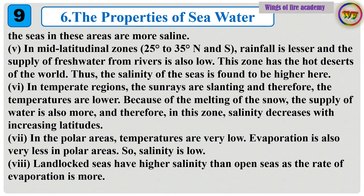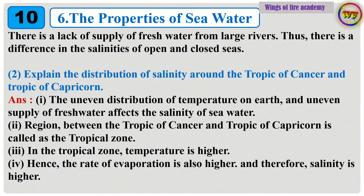In temperate regions, the sunrays are slanting and therefore the temperatures are lower. Because of the melting of the snow, the supply of water is also more, and therefore in this zone salinity decreases with increasing latitudes. In the polar areas, temperatures are very low and evaporation is also very less, so salinity is low. Landlocked seas have higher salinity than open seas as the rate of evaporation is more and there is a lack of supply of fresh water from large rivers. Thus, there is a difference in the salinities of open and closed seas.